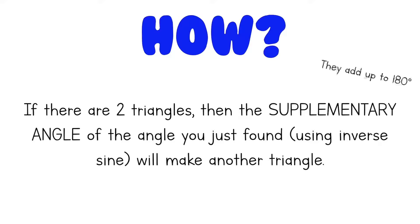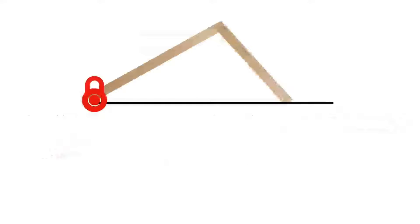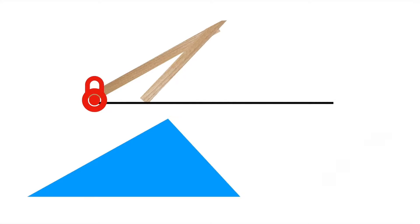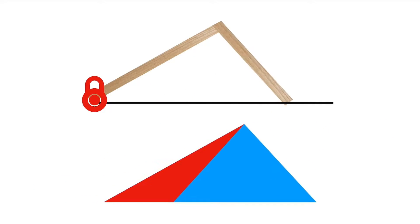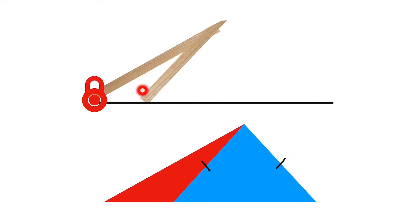Supplementary means the two angles add up to 180 degrees. And why is it the supplementary angle? Let's look back at our model. Our first triangle looked like this, and our second triangle looked like this. When we swung the leg around to make the second triangle, the side length never changed — so these two sides are congruent. Since those two sides are congruent, these two angles are congruent. If we call this angle theta, then the other is also theta, and the adjacent angle makes a straight line with theta — so it must be 180 minus theta, which is supplementary.